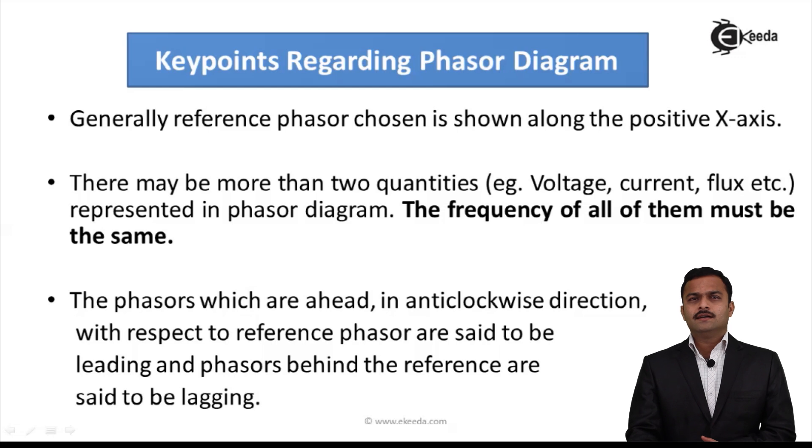Now, let us go to the next point where some important aspects regarding phasor diagram. The first point is generally reference phasor chosen is shown along the positive x axis. Most of the cases, whenever we start drawing the phasor diagram, we need to choose a reference phasor. So reference phasor normally we take as a positive x axis. So the quantity which are along the positive x axis, we take that as a phasor which we call as a reference phasor.